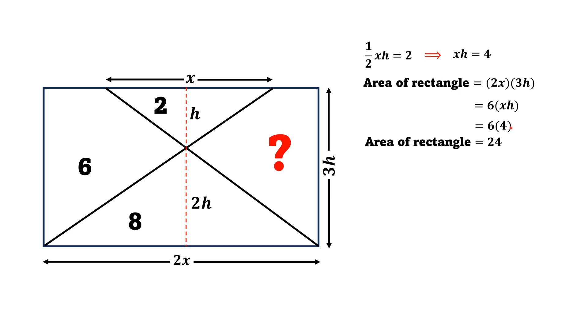Now the area of this rectangle is the sum of the areas of these four portions: 2, 6, 8, and the unknown area. So that is equal to 2 + 6 + 8 + the unknown area = 24.